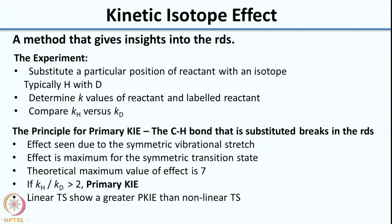We then moved to the kinetic isotope effect, which gives insights into the rate-determining step. In this experiment, a position of a reactant is substituted with an isotope — typically hydrogen with deuterium. A primary kinetic isotope effect occurs when the C–H bond breaks in the rate-determining step; the effect is due to symmetric vibrational stretch and is maximum with a symmetric transition state. The theoretical maximum value is 7, and KH/KD > 2 indicates a primary kinetic isotope effect.